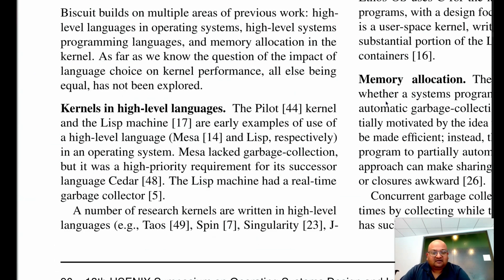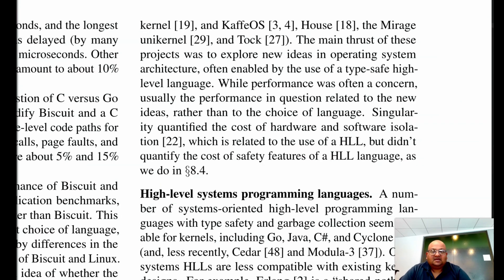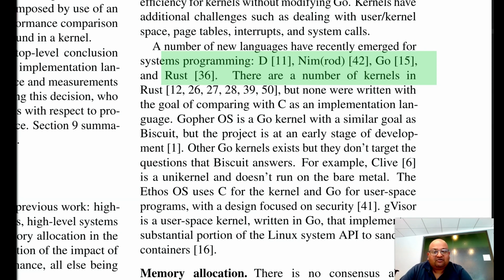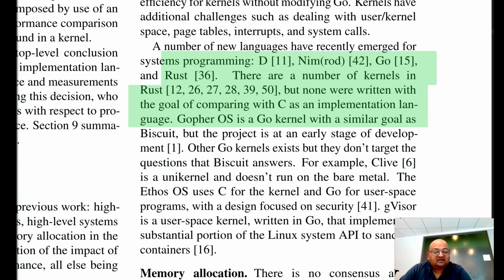There have been other kernels in the past also written in high-level languages. For example, the Lisp machine. There were operating systems like CafeOS, which were written in Java. There was a project at Microsoft Research called Singularity, which tried to build an operating system kernel on the .NET virtual machine stack. People have also tried writing OS kernels in more modern systems languages like D or Rust. But what the authors are really trying to stress is comparing the experience of writing a kernel in a high-level language with that of writing one in C.